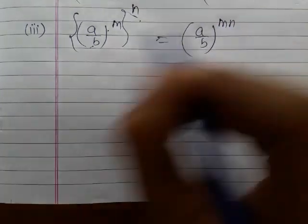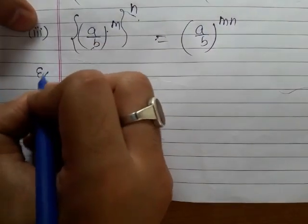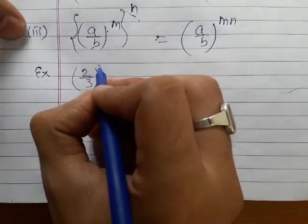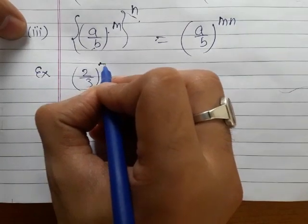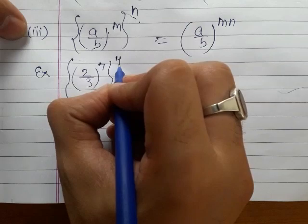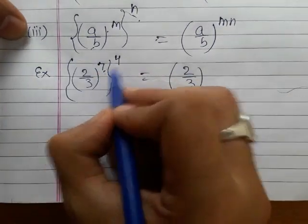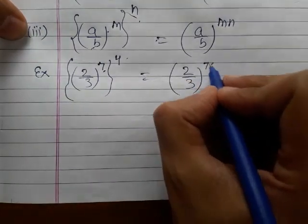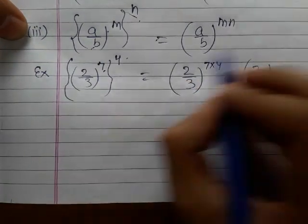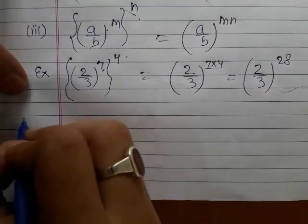So we write a over b to the power m multiplied by n. For example, suppose we have (2/3)^7 raised to the power 4. We multiply the powers: 7 multiplied by 4 equals 28, so the answer is (2/3)^28.